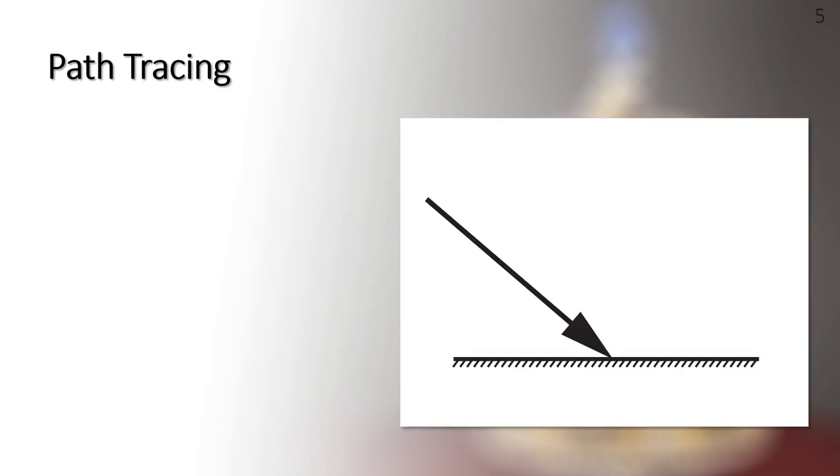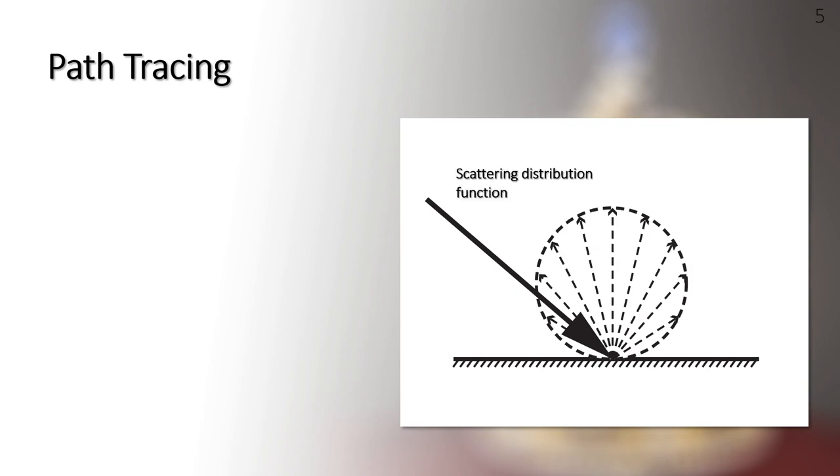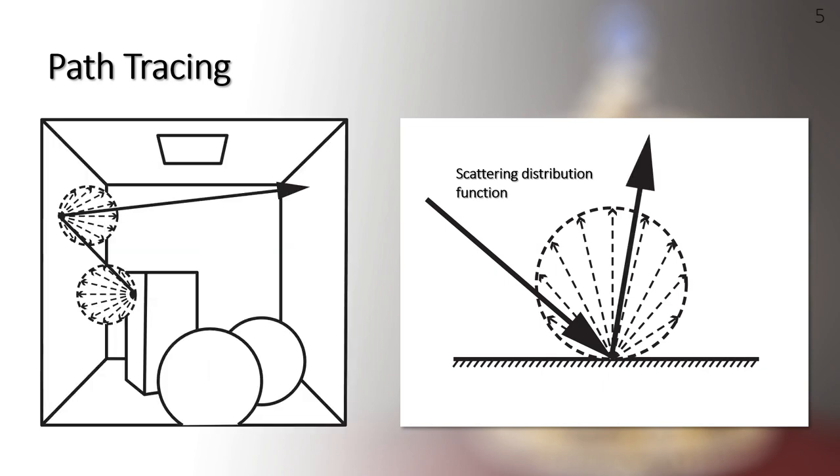The idea of path tracing is simple. Given the path vertex and the incident direction, we repeatedly sample an outgoing direction according to the surface's scattering distribution function or the light sources to create the next path vertex until the path connects to the light source, forming an effective light path.